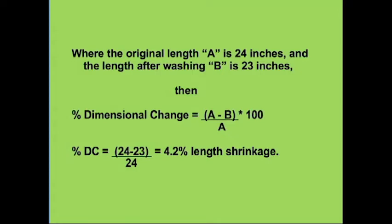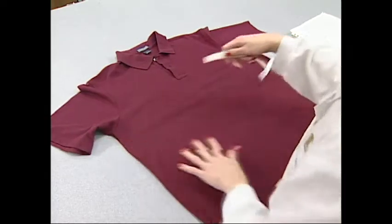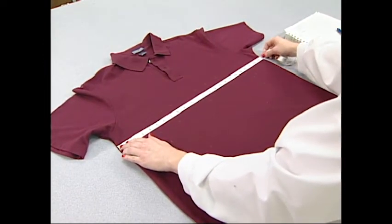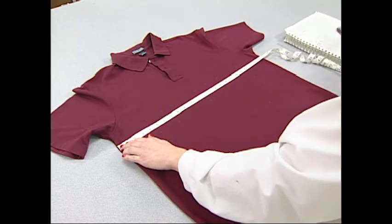For example, if the original length is 24 inches from the shoulder at the neck insertion to the bottom of the shirt, and the washed length is 23 inches, then the amount of shrinkage would be 24 minus 23 divided by 24, multiplied by 100, giving a value of 4.2 percent length shrinkage. Length dimensional change is also measured from the bottom of the placket to the hem mark. In the width direction, the benchmarks from just under the arms are measured, then the hem is measured, and the calculations for dimensional change are made.